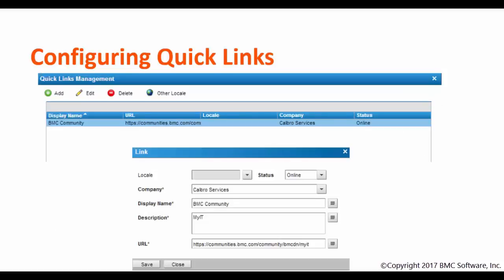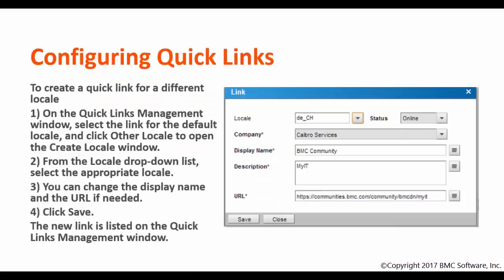This is an example of how you can create a quick link. To create a quick link for a different locale, on the Quick Link Management window, select the link and click on Other Locale. Open the window, select the locale, and save the changes.